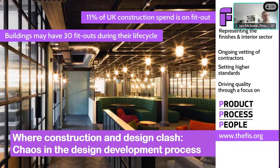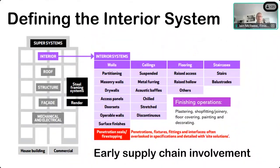The sector we represent is about £10 billion and covers the finishing of the interior sector — fit-out of commercial construction and the finishing of domestic premises at the commercial end, including house building and high-rise residential. The interior system is made up of walls, ceilings, floors and staircases. We also get involved in SFS cladding and rendering because they're very aligned to the processes we do inside. We've been looking at procurement and design development as the source of many of the problems we face.